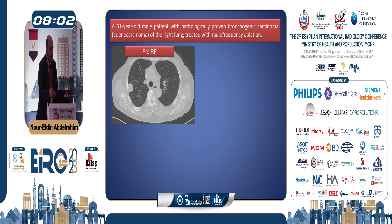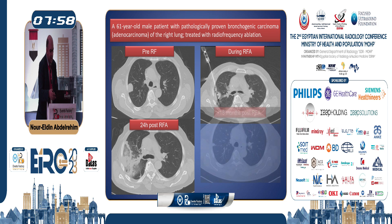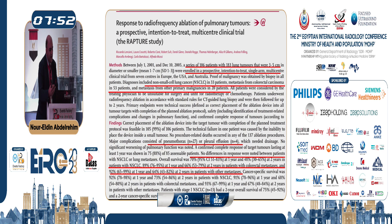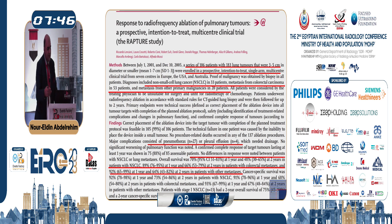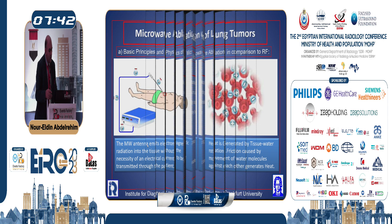This is another case. Pre-RF, this lesion is located at the pleural surface. We had a large zone of ablation and at 18 months post-ablation we get fibrotic tissue. The added value of ablation is that we can apply it for both primary and metastatic disease, and histopathology does not play a role in the management of patients.